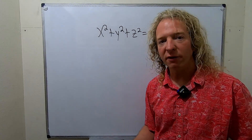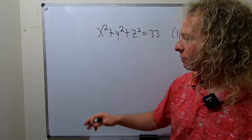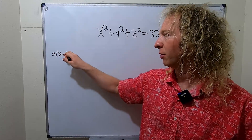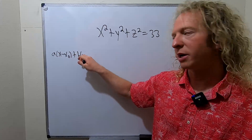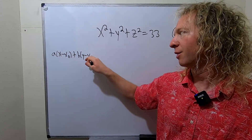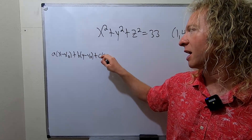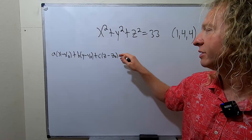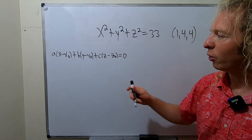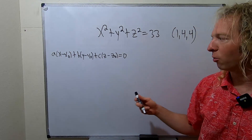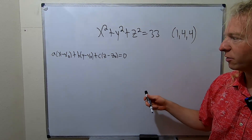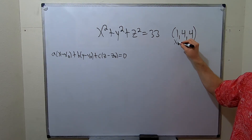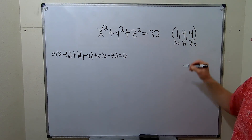Recall that the formula for the equation of a plane is a(x - x₀) + b(y - y₀) + c(z - z₀) = 0. Here, a, b, and c form your normal vector, and x₀, y₀, z₀ is your point.